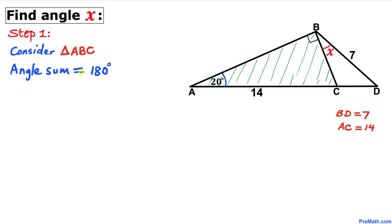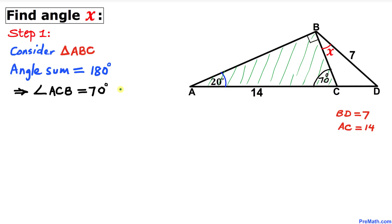Here's our very first step. Let's consider triangle ABC. We know that the sum of the angles of this triangle is 180 degrees. This angle is 20 degrees and this angle is 90 degrees, so this angle has got to be 70 degrees. Thus angle ACB turns out to be 70 degrees.